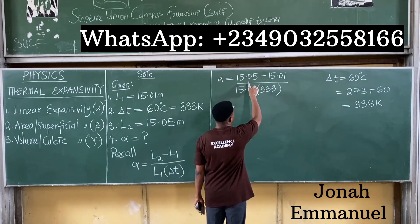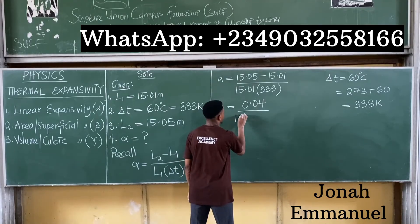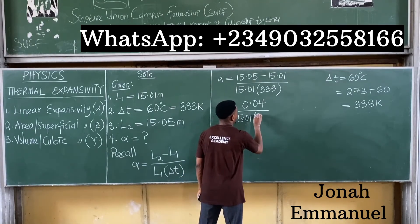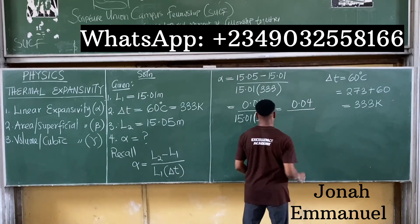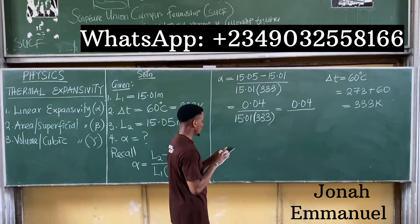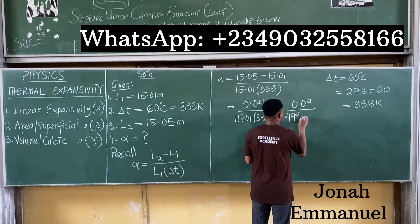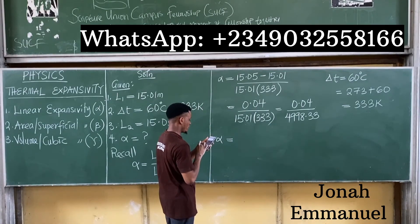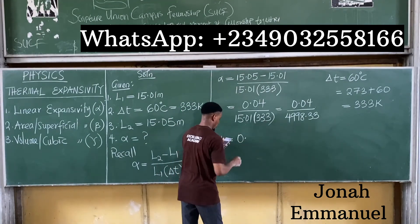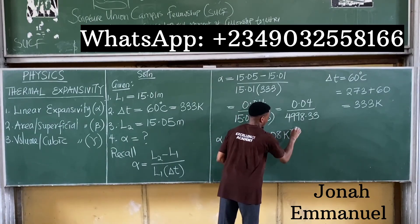This gives alpha equals 0.04 all over 15.01 times 333. Multiplying the denominator: 15.01 times 333 equals 4998.33. So alpha equals 0.04 divided by 4998.33, which is approximately 8.00 times 10⁻⁶ per Kelvin. That is the value of the linear expansivity.